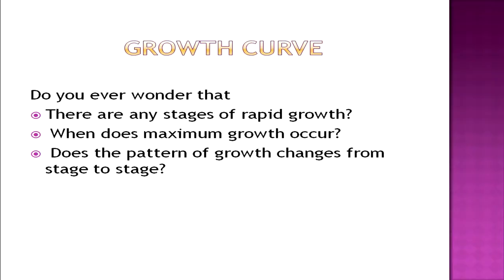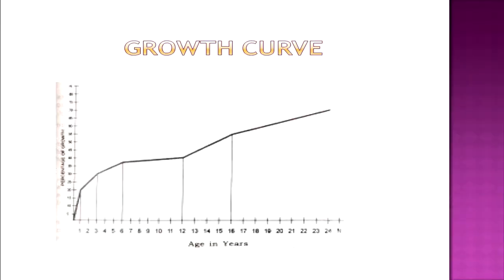Now let us know something about the growth curve. Have you ever wondered whether there are any stages of rapid growth, or when maximum growth occurs? Does the pattern of growth change from stage to stage? In this diagram, age in years is shown on the x-axis and percentage of growth on the y-axis. The slope of the curve indicates the nature and level of growth. It is clear from this diagram that growth is very rapid in the first three years, and in the first year it is most rapid.